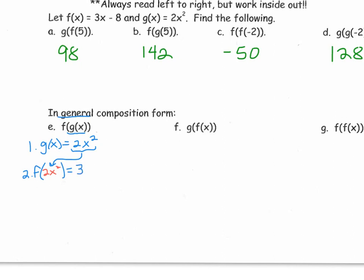f of x was linear, it was 3x minus 8. So I'm going to write my 3, but then I'm going to put, instead of just x, I'm going to put that 2x squared in its place. And then minus 8. From here, we just simplify if possible. We can combine these two coefficients for a product of 6x squared minus 8, and there's really nothing else to do there. The general composition form of f of g of x is 6x squared minus 8.